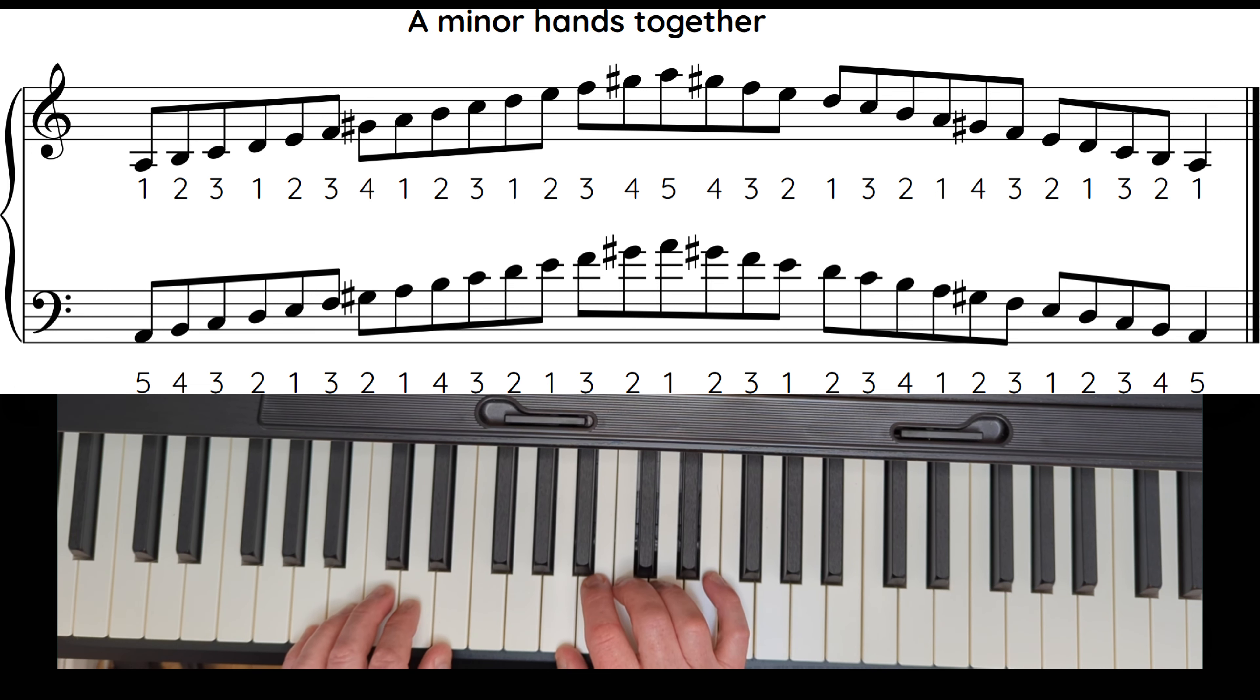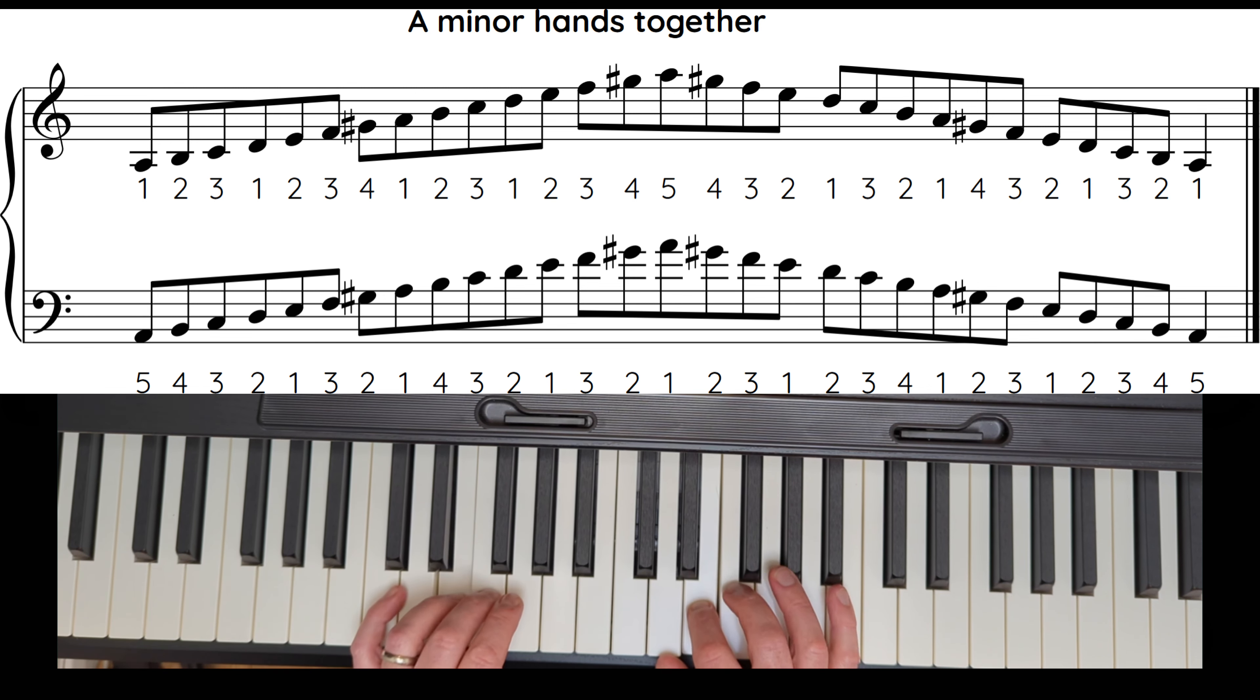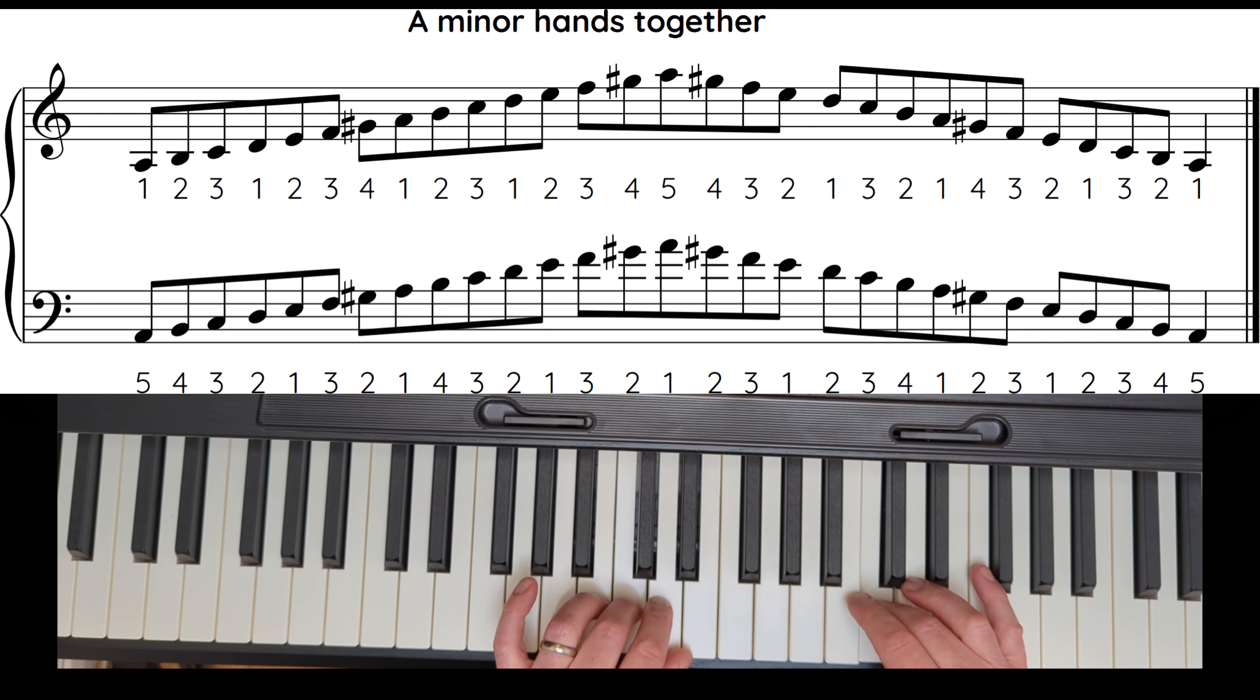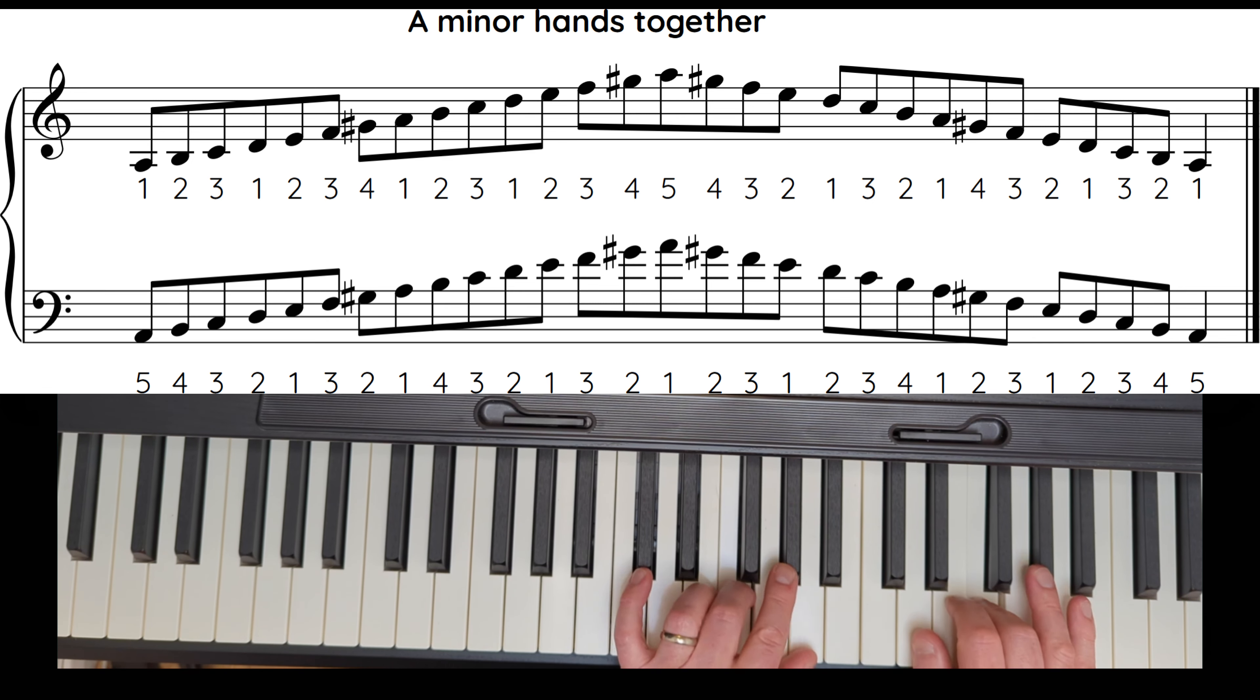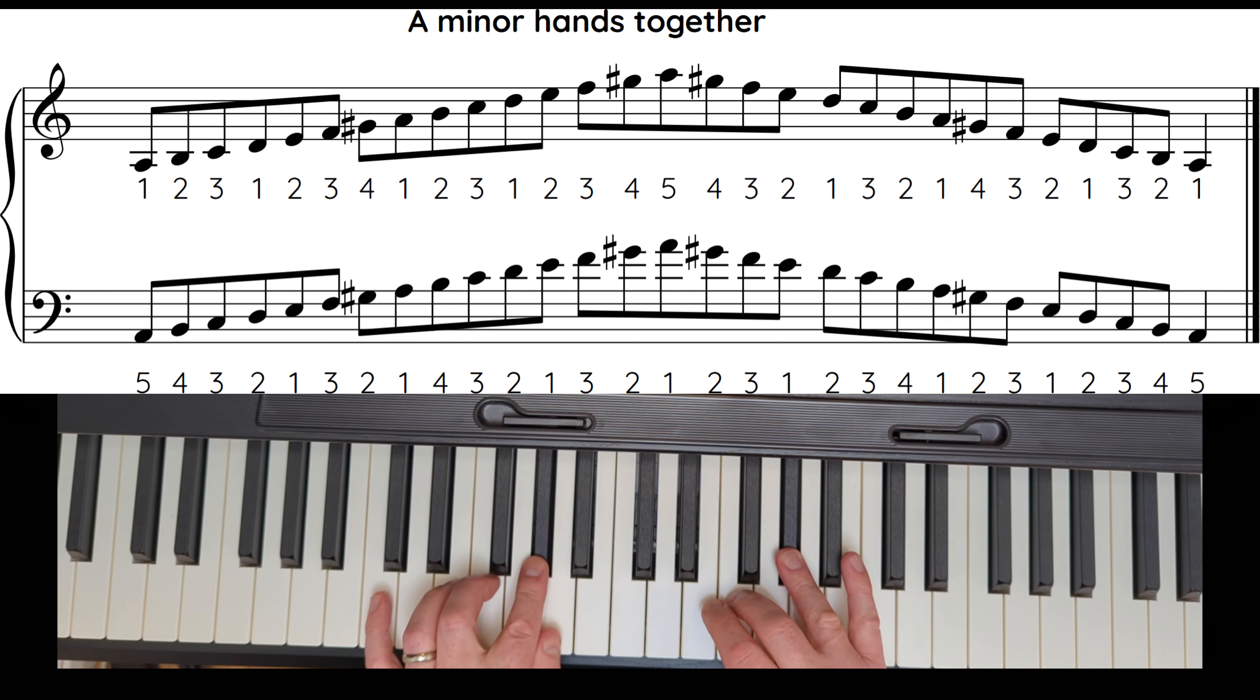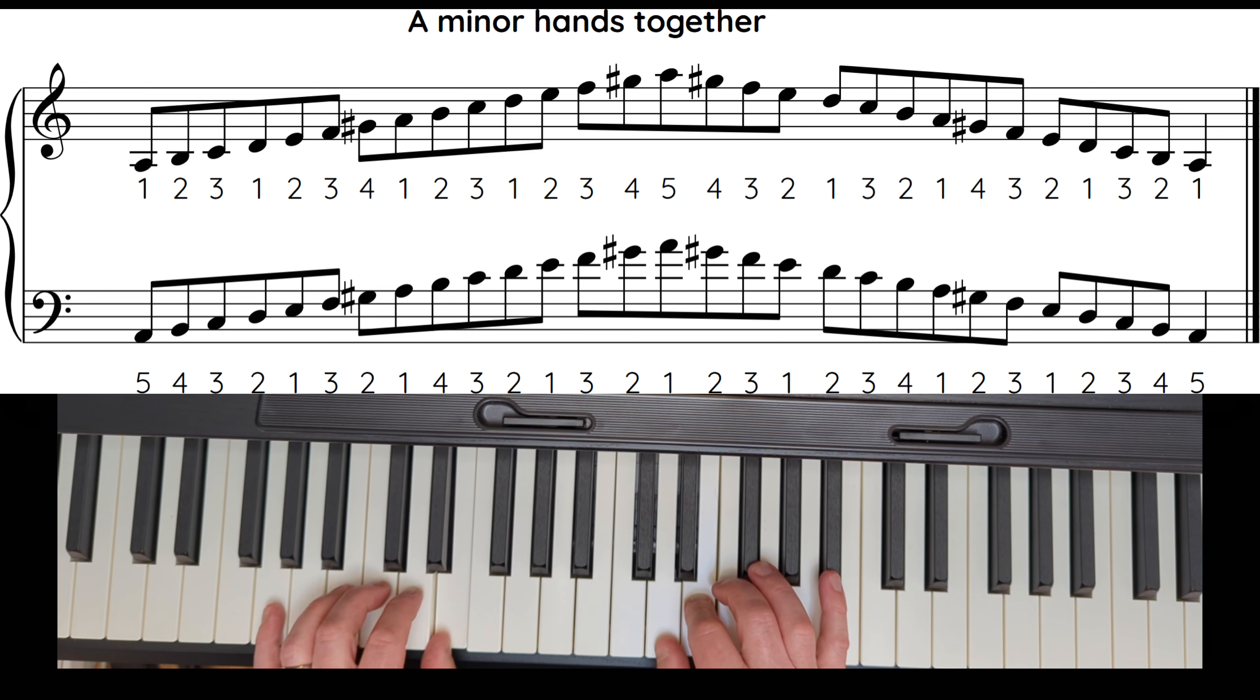It's got a G sharp in it. When I say regular fingering, I mean both hands are using the most common finger that we use for scales, which is this one. Left hand 3, here's the G sharp, left hand 4, left hand 3, left hand thumb, left hand 4, right hand 4 on G sharp, right hand 3, and finish the scale. That's A minor harmonic.